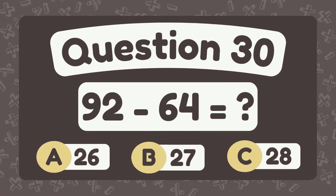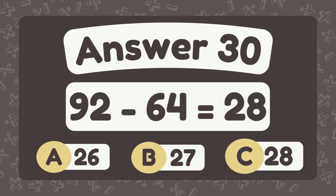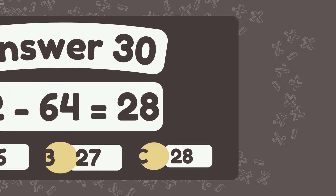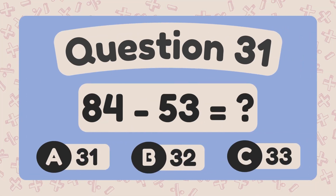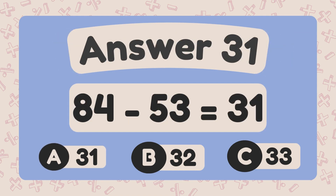What is ninety-two minus sixty-four? The answer is twenty-eight. What is eighty-four minus fifty-three? The answer is thirty-one.